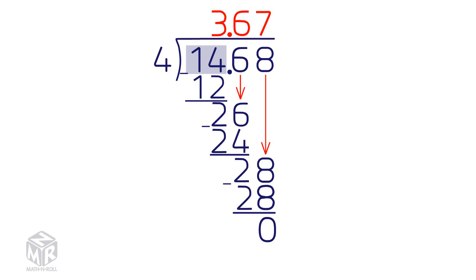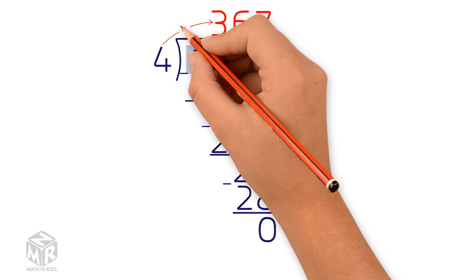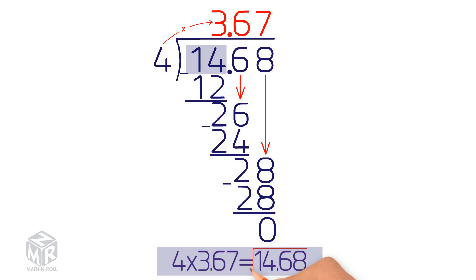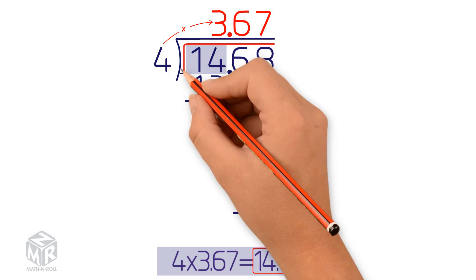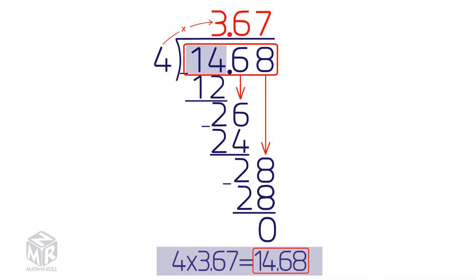So our answer is 3.67. We can check our work by multiplying the divisor times the quotient. We get 14.68, which is the same as our dividend. So our answer is correct.